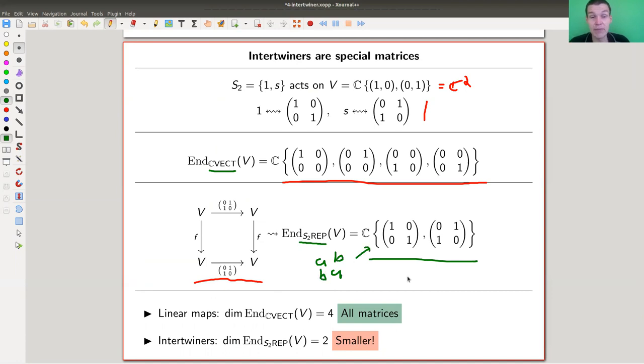Okay, so we have very few intertwiners in this case, with half the number of intertwiners than all matrices. Intertwiners are really just special matrices. They're matrices that are special in the sense that they intertwine the action of the group. That's where the name I guess comes from.